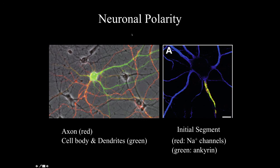This fluorescence micrograph shows the polarity of neurons — the axon is stained red and the cell body and dendrites are stained green, clearly showing the difference in polarity. Another fluorescence image shows the initial segment of the axon where sodium channels are marked with a red fluorescent stain and ankyrin — a membrane component — is highlighted in green. The sodium channels are necessary to generate the action potential, and ankyrin helps cluster these sodium channels in the initial segment, which is especially important in myelinated neurons.